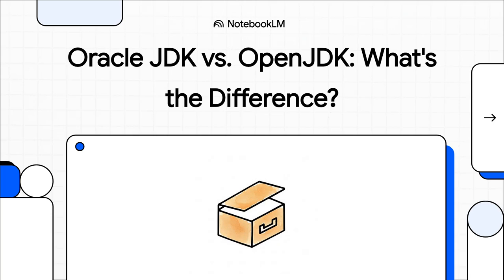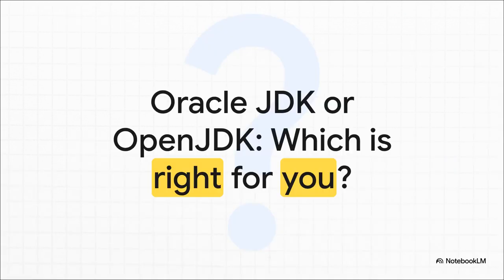If you're a Java developer, you've probably hit this fork in the road: Oracle JDK or OpenJDK. They look so similar, so what's the actual difference? You're firing up a new machine, starting a new project, and you've got to make a choice. Which one should you pick? By the end of this, that decision is going to feel like a total no-brainer.